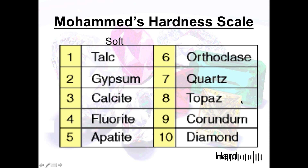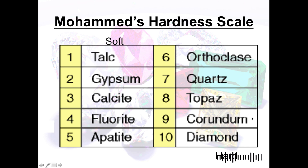Next is topaz, rated 8 on the Mohs scale. Topaz is a silicate mineral commonly used for gemstones and jewelry. After that is corundum, rated 9 — it is a rock-forming mineral, with rubies and sapphires being well-known examples.